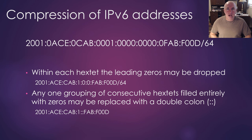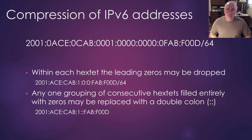Let's talk about compression of IPv6 addresses. We don't want to write an address like this — can you imagine typing this into computers and network devices? We can actually compress it down quite a bit. The first thing we can do is remove all the leading zeros. Within each hexet — remember, a hexet is the space between the colons — that zero ACE, we can remove the leftmost zero; that zero CAB, we can take the zero off; three zeros and a one, we can take that off; four zeros, we can get rid of three of them. That's one way we can compress an IPv6 address, but we can go further.